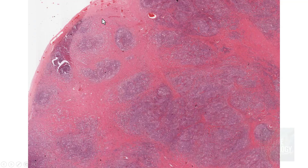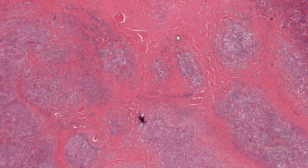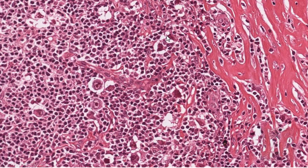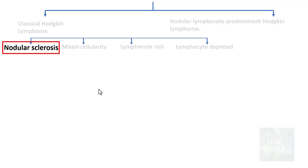Looking at the nodular sclerosis histology — the collagen forms bands within the lymph node, dividing it into small nodules. The lower-power view shows the collagen bands and nodules of lymphocytes along with characteristic Reed-Sternberg cells. You can see the lacunar spaces around these cells, including the mononuclear variant with prominent eosinophilic inclusion-like nucleoli. This is very typical of nodular sclerosis type Hodgkin lymphoma.